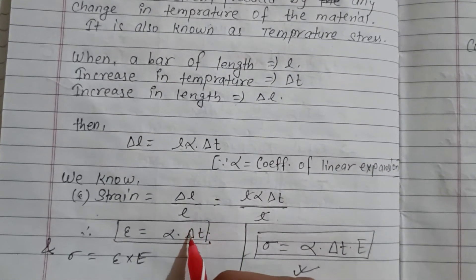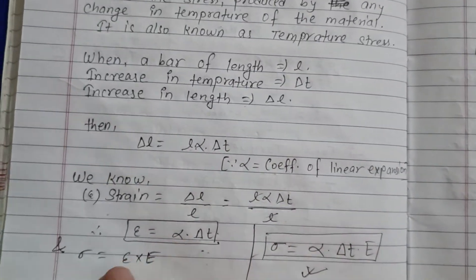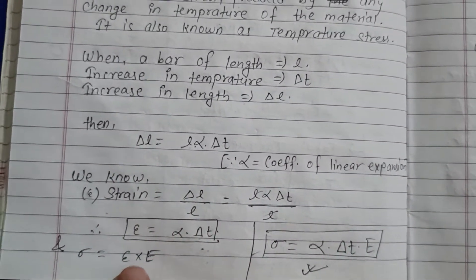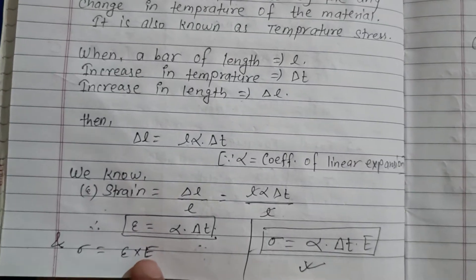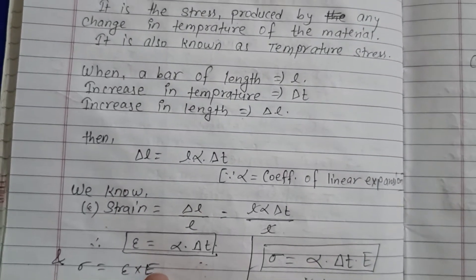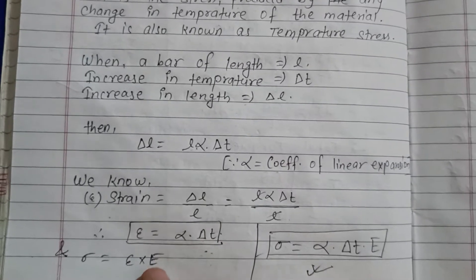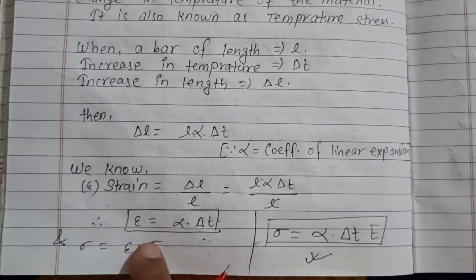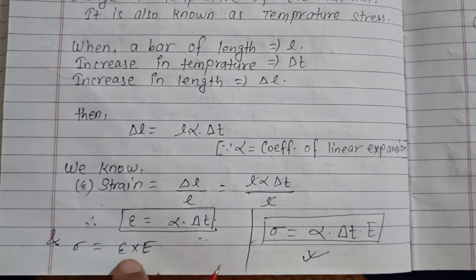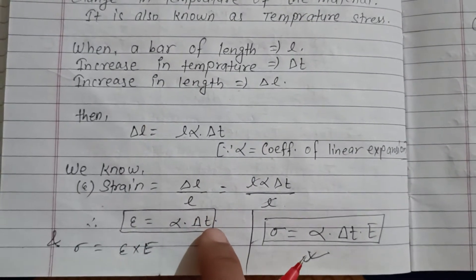Sigma equals E into alpha into delta-T, where E is Young's modulus of elasticity. So the thermal stress sigma is given by E·alpha·ΔT.